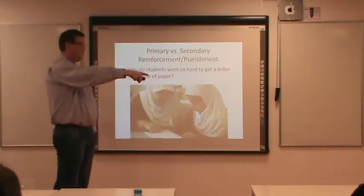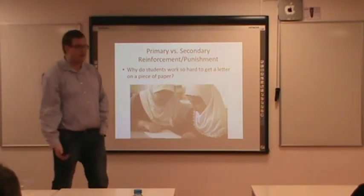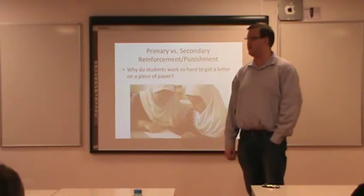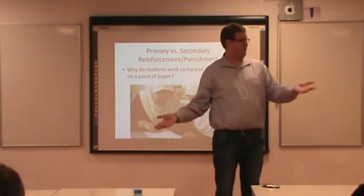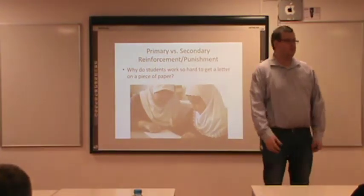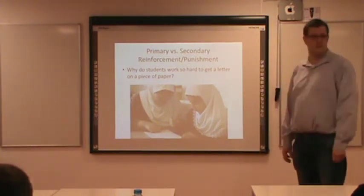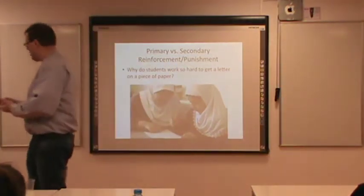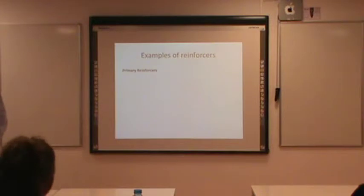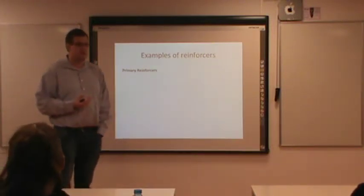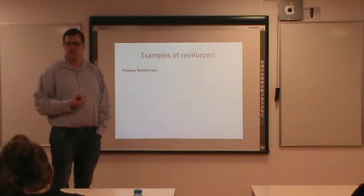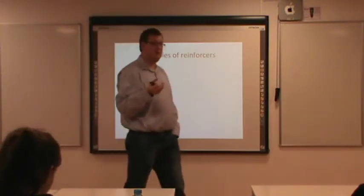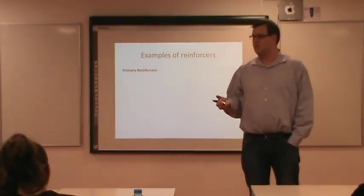Contrast this with secondary reinforcers — things that you have to learn about. Academic success is a secondary reinforcer: the A is a good thing because your parents and teachers told you it was. Money is a secondary reinforcer. Money is really meaningless by itself — it's meaningful because of the things we can do with it. With money we can get primary reinforcers: food, water, and other things. Money is a secondary reinforcer because it leads to primary reinforcers.